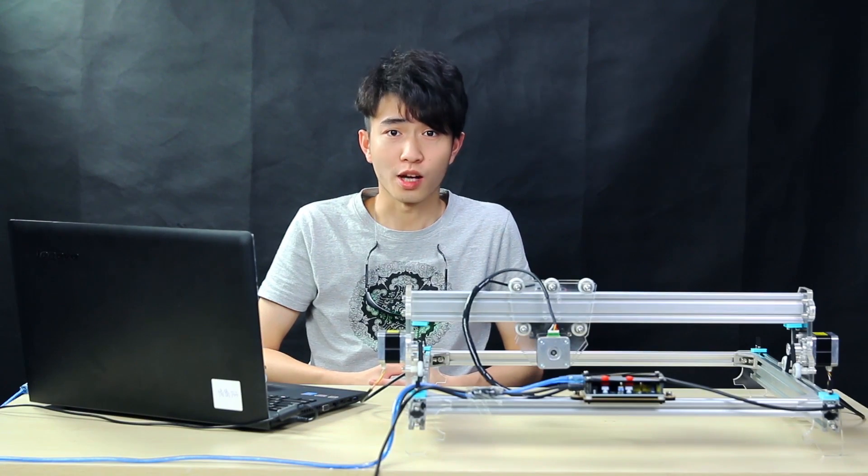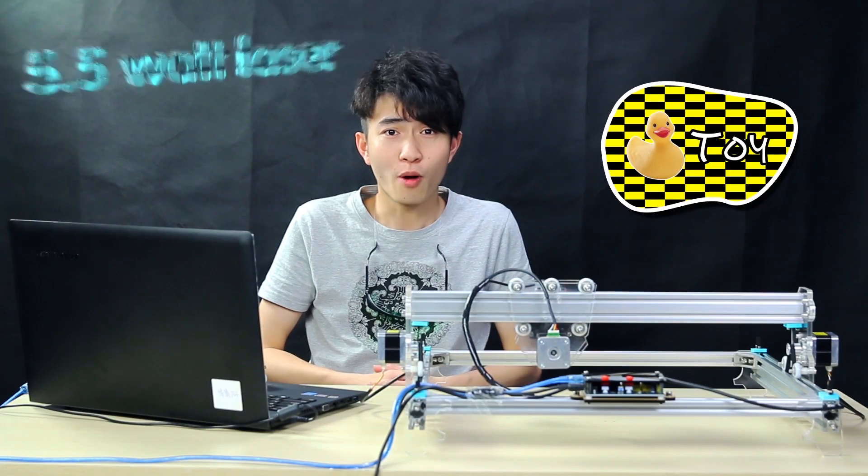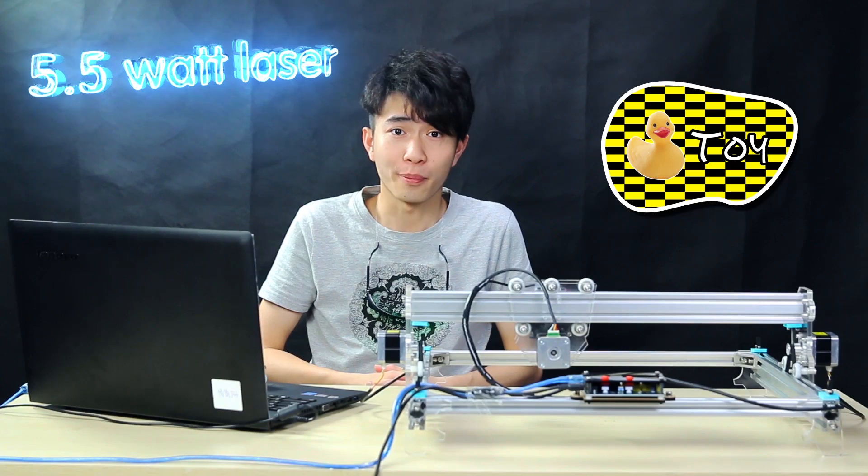Hey guys, welcome to Banggood. This is Arthur. Today we are going to show you a super cool toy, the 5.5 volt laser engraving machine. What does 5.5 volt mean? It means that the laser is more powerful to engrave thicker materials and it needs less time.